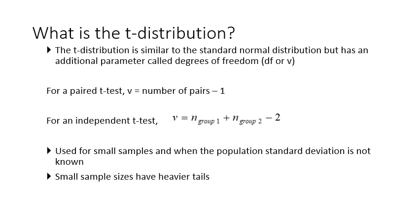When we have small sample sizes — n less than 30 — we replace the normal distribution with Student's t-distribution, which has slightly less probability of being close to the mean and a somewhat larger probability of being in the tails. As sample size increases, the critical values tend towards normality. For example, in a two-tailed test with 5% significance, the critical value gets closer to 1.96 as sample size increases.